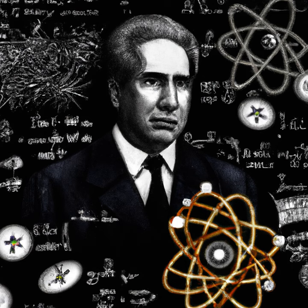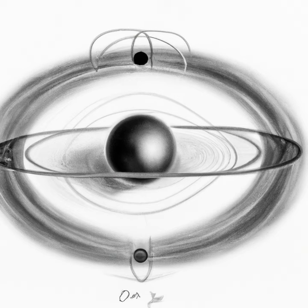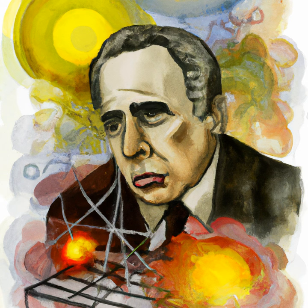Bohr is best remembered for his model of the atom, which postulated that an atom's electrons orbit its nucleus in discrete energy levels. This became known as the Bohr model, and it helped to elucidate the structure of the atom, allowing for a better understanding of atomic interactions and providing a basis for further study of atomic structure.